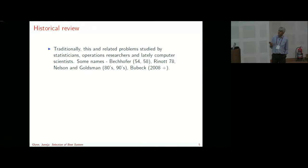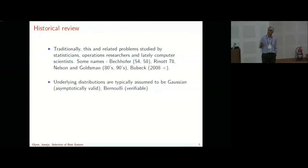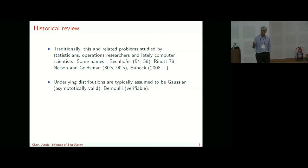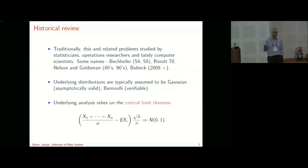Traditionally, this and related problems have been studied by statisticians, operations researchers, and lately by computer scientists. Underlying distributions are typically assumed to be Gaussian — justified by the central limit theorem, so it's asymptotically valid — or Bernoulli, which is verifiable whenever true. The underlying analysis typically relies on the central limit theorem: you generate independent samples, subtract the mean, scale by square root of n and normalize by the standard deviation, and it converges to a Gaussian random variable.